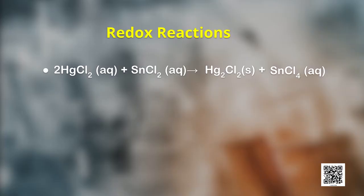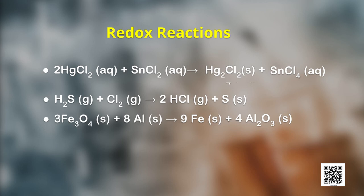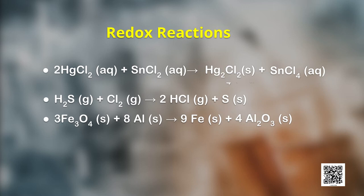You can see that addition of the electropositive element mercury takes place when mercuric chloride changes to mercurous chloride. By observing closely, you will notice that simultaneously stannous chloride changes to stannic chloride by addition of electronegative element chlorine to it. It was soon realized that oxidation and reduction always occur simultaneously. Hence, the word redox was coined for this class of chemical reactions.